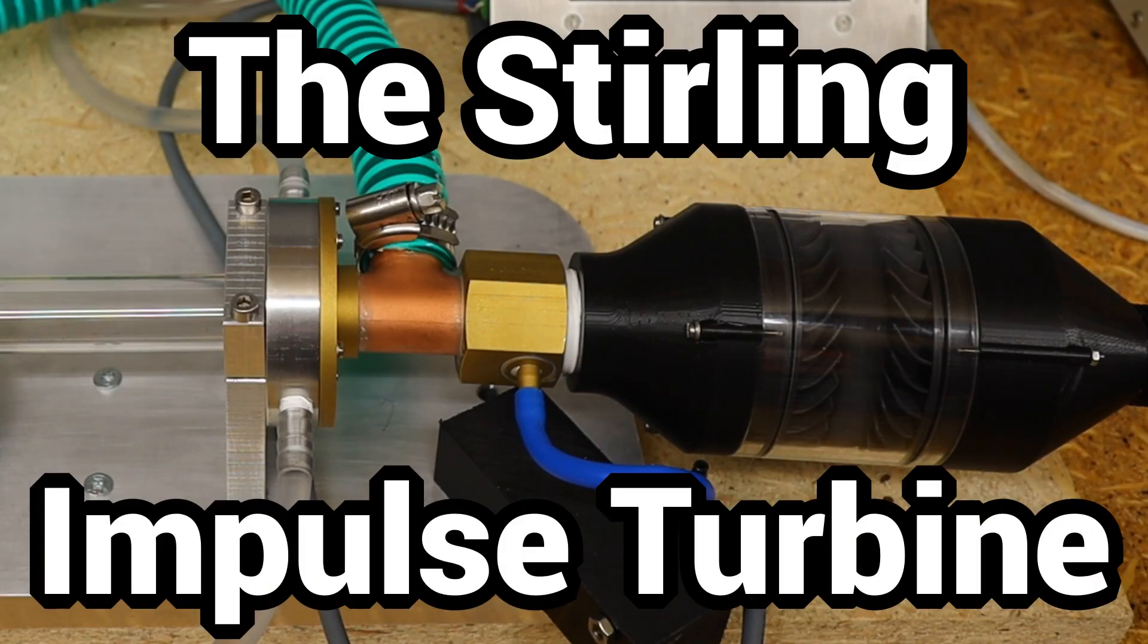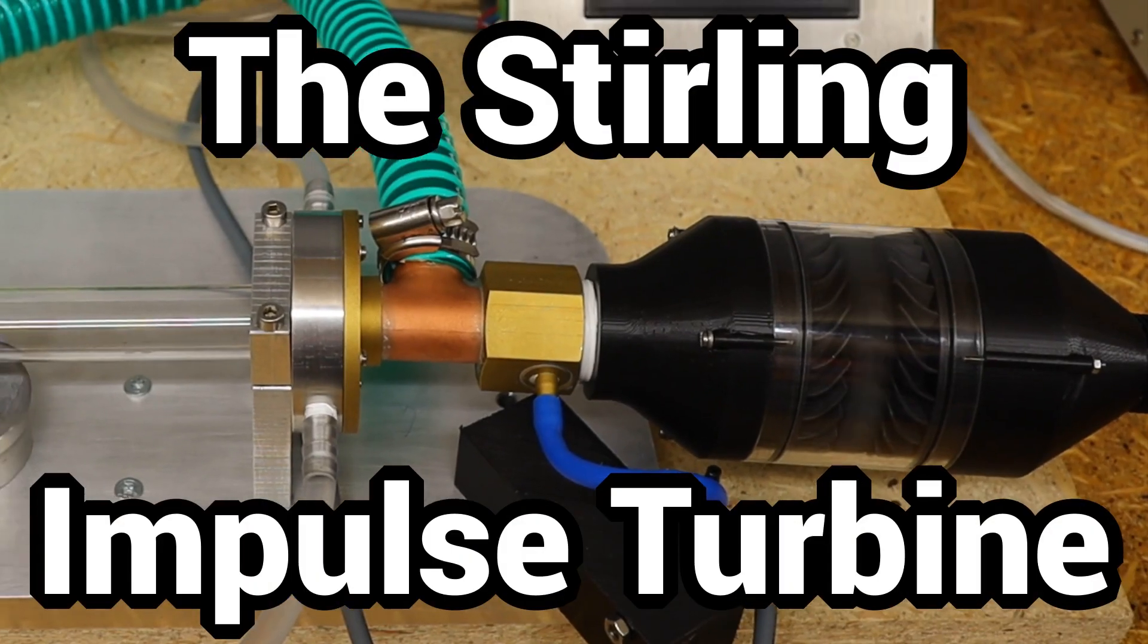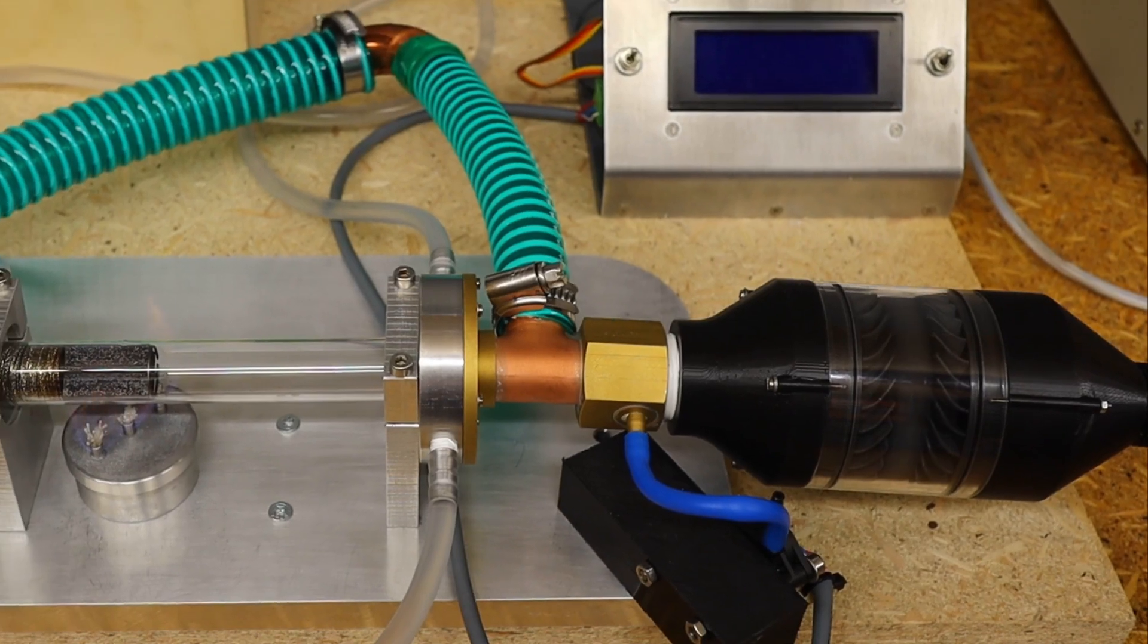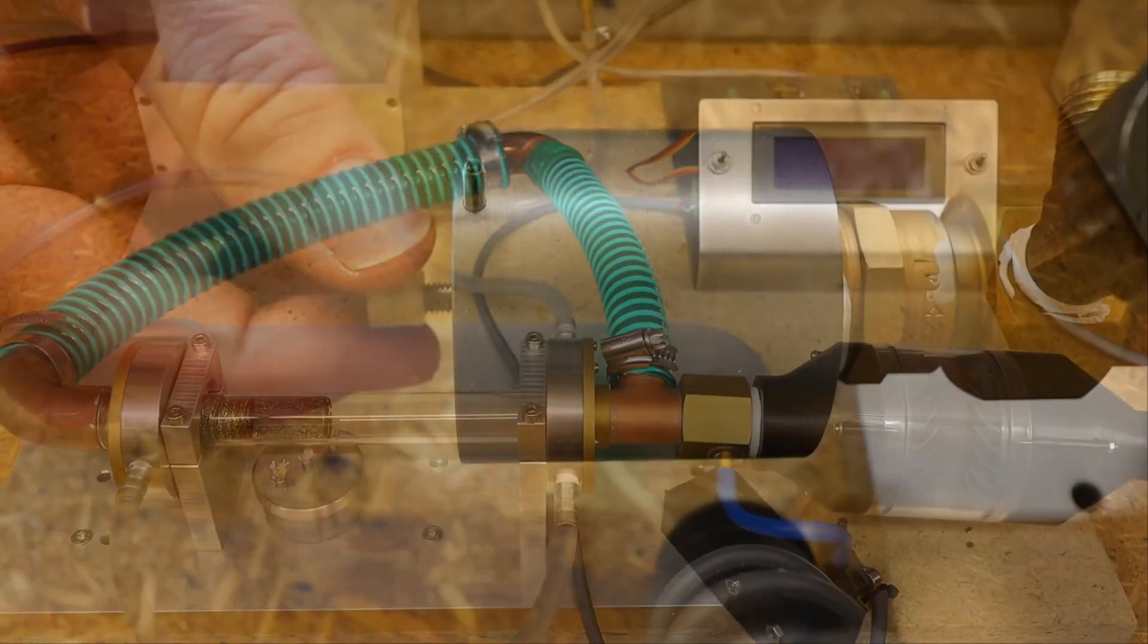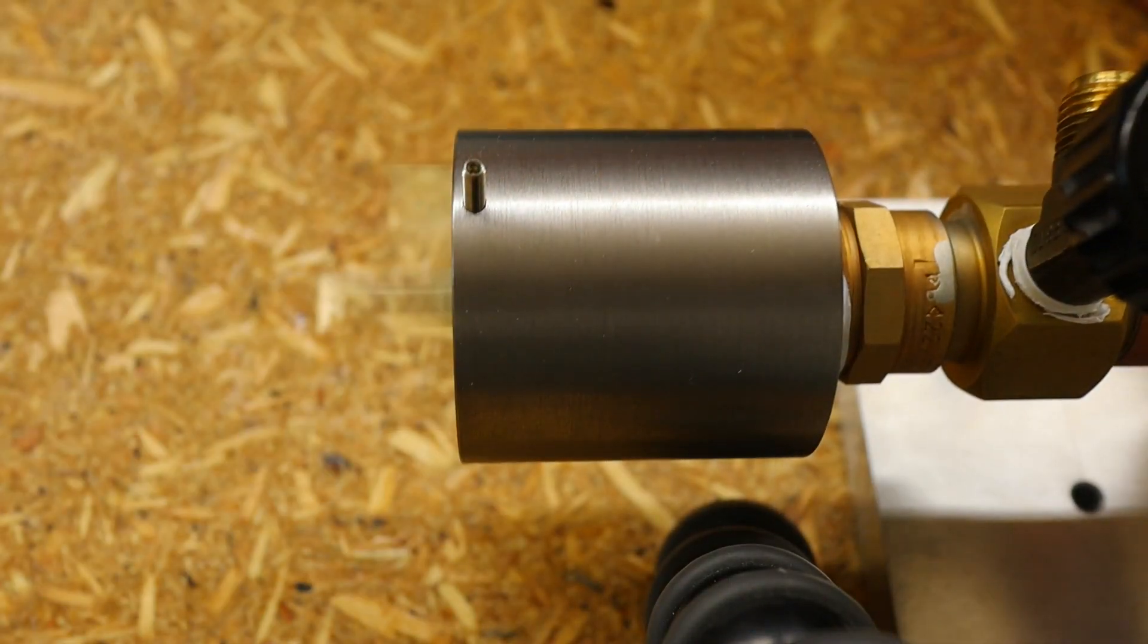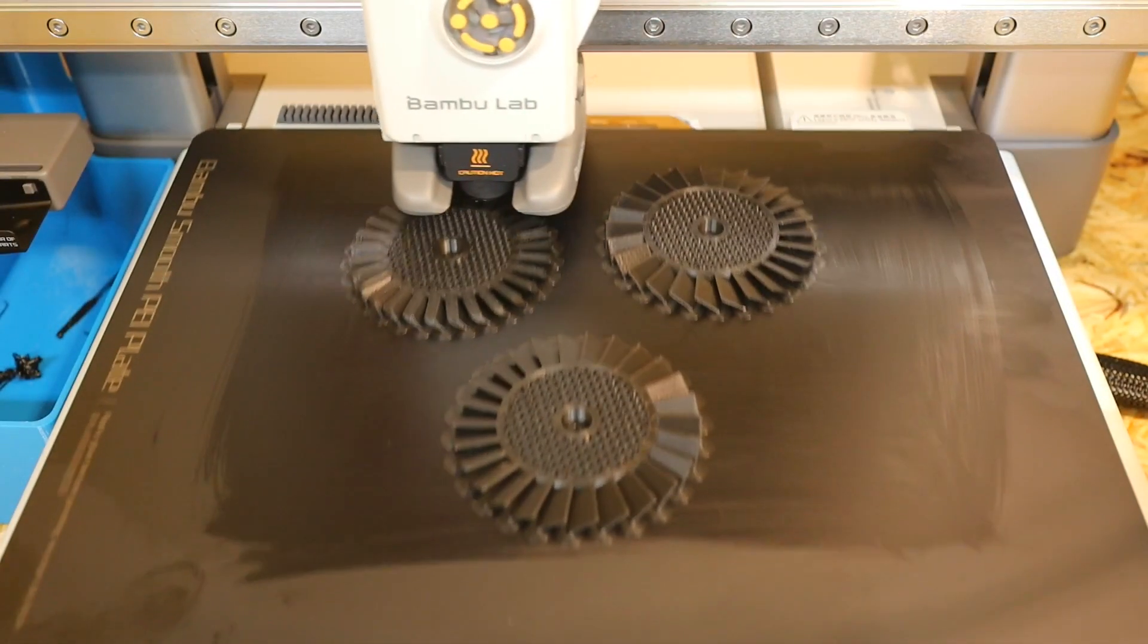The new bi-directional impulse turbine is the ideal addition to the thermo-acoustic Stirling engine. Unlike the piston drive used previously, it is virtually wear-free and can be easily produced by anyone with a 3D printer.